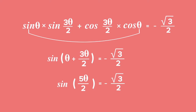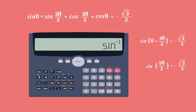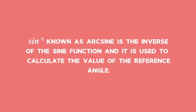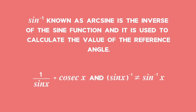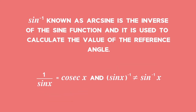Now we can use a scientific calculator or special angles to solve for theta. On the calculator, press second function sine of negative square root 3 over 2 to calculate the reference angle. Note that when you use the inverse sine button, you are using a function called arcsine — the inverse function of sine x — used to calculate the angle corresponding to a specific ratio. Do not confuse arcsine x with the reciprocal function cosec x, which is 1 over sine x. The inverse function and the reciprocal of a function are not the same thing.